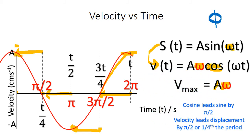To recap: cosine leads sine by pi over two. I shifted the original sine function to the left by pi over two. We say cosine leads sine because at t equals zero, cosine has a maximum, while at t equals zero, sine is at a minimum. The velocity leads displacement by pi over two, or one-fourth the period. Always remember that derivatives lead the functions, and the functions lag the derivatives.